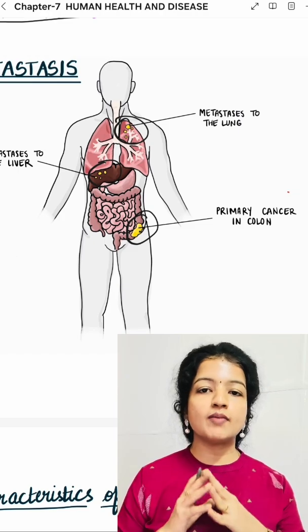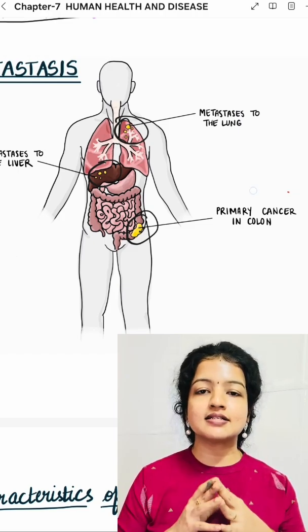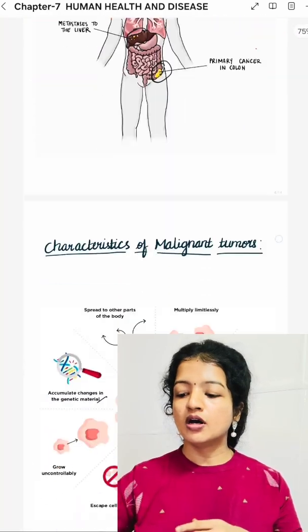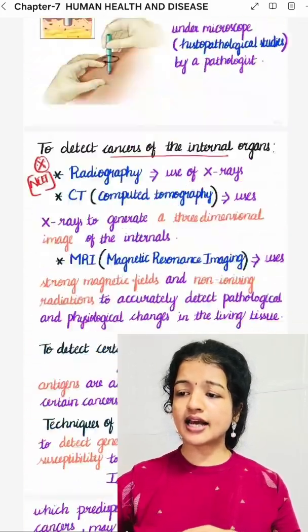This property of malignant tumours — spreading to distant sites — is called metastasis. This is cancer.